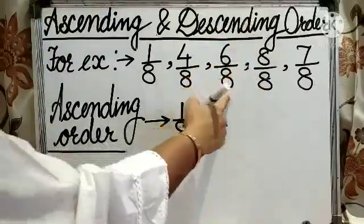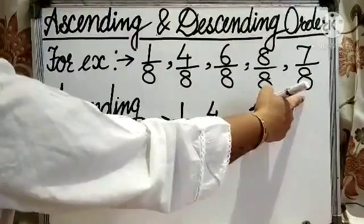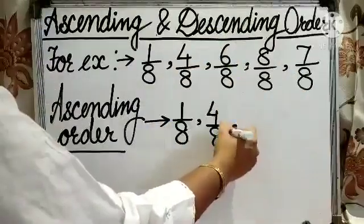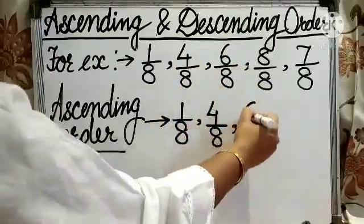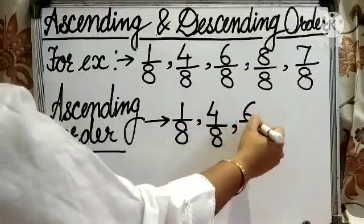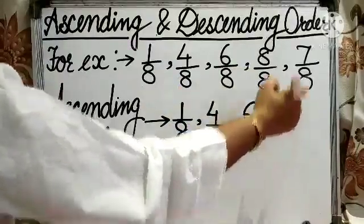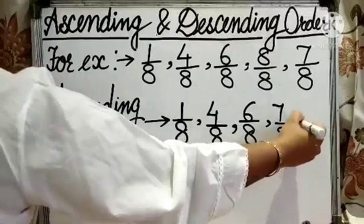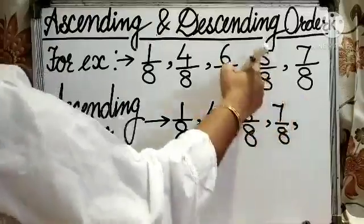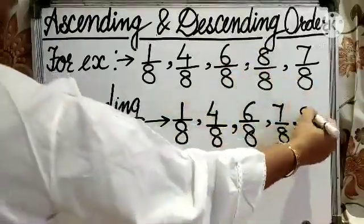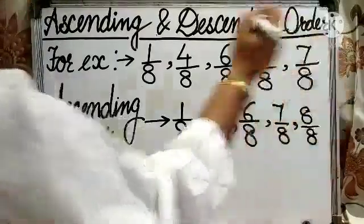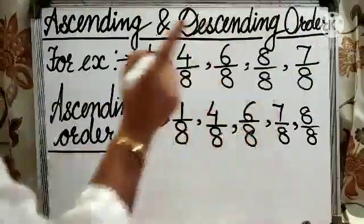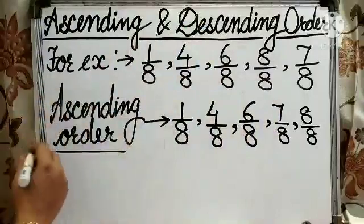Now 3 fractions are left only and 6 by 8 will be the smallest fraction now. Then 6 by 8, then 7 by 8 and at last 8 by 8. We have arranged all the fractions in ascending order.